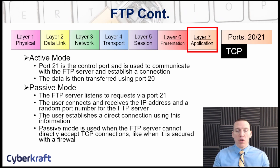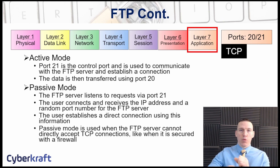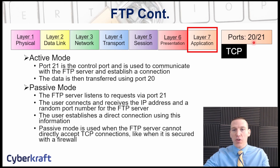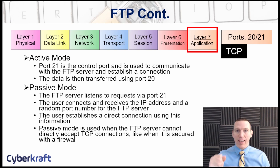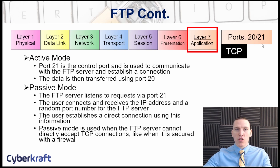There are two different modes — you can run FTP in active mode and passive mode. In active mode, port 21 is the control port used to communicate with the FTP server, and data transfer is done over port 20. In passive mode, the server is always listening on port 21, and then a random port number can be assigned whenever a file transfer is in progress.